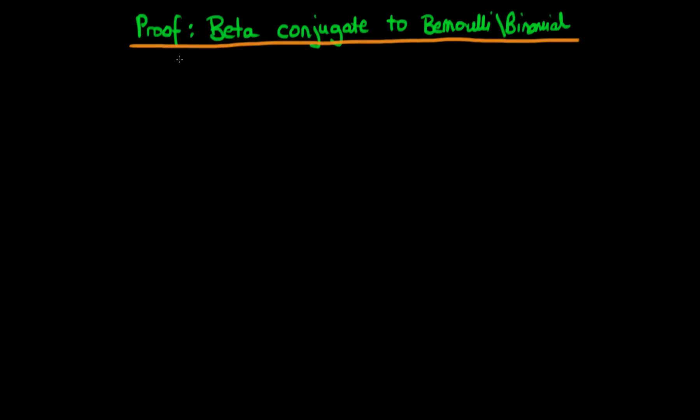In this video I want to provide a proof that the beta distribution is actually a conjugate prior to the Bernoulli and the binomial distributions.